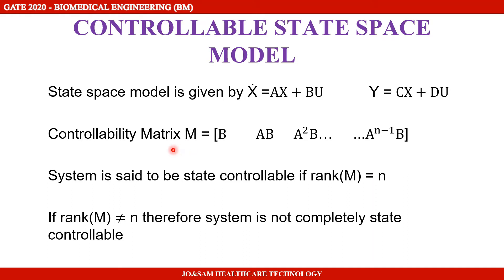Now we go to the controllability matrix. The controllability matrix M is defined as: M equals [B, A·B, A²·B, ..., A^(n-1)·B], where n is the order of the matrix. A system is controllable if the rank of M equals the order of the matrix n. If the rank is not equal to n, it is not a controllable state space model.